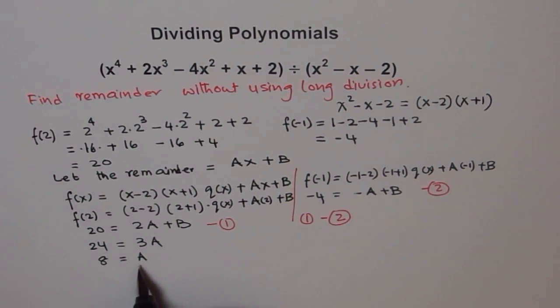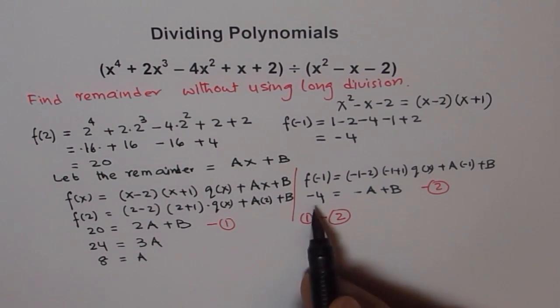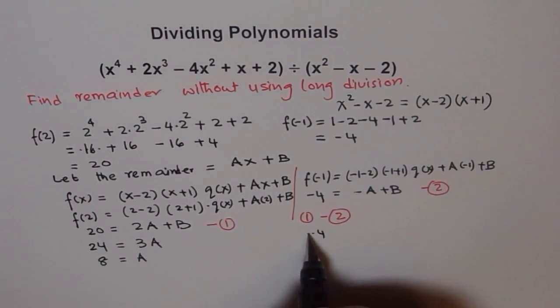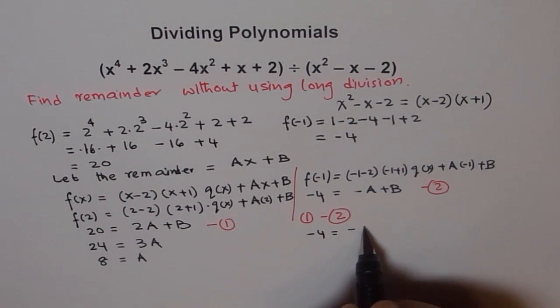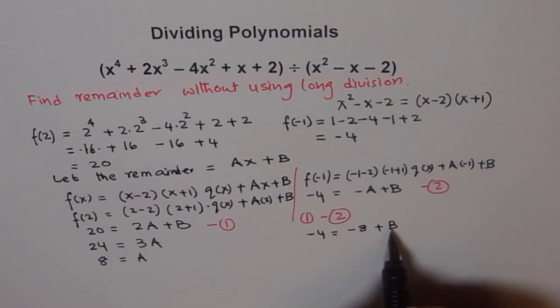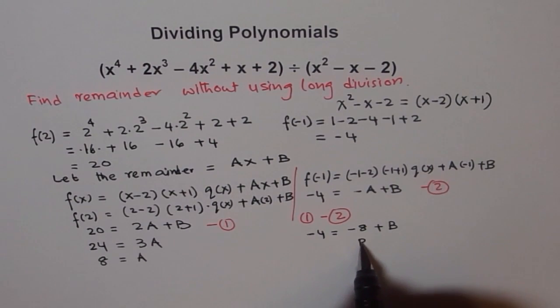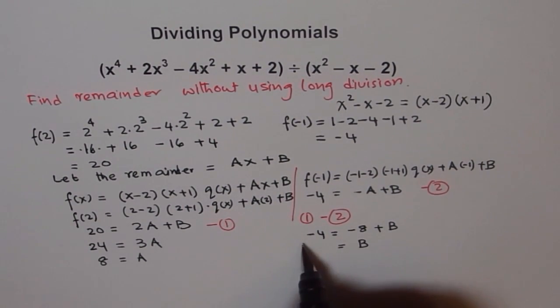Now, once we know A as 8, we can plug it in here and find B. So from here, -4 equals to -8 + B. So therefore, what is B equals to? B is equals to 8 will go that side plus 4.